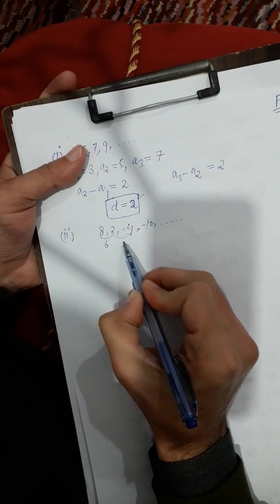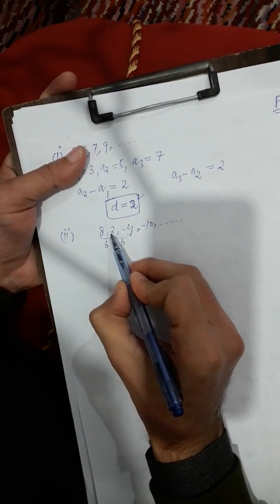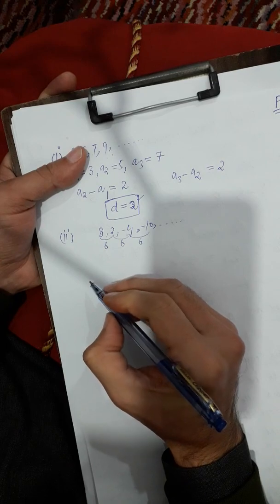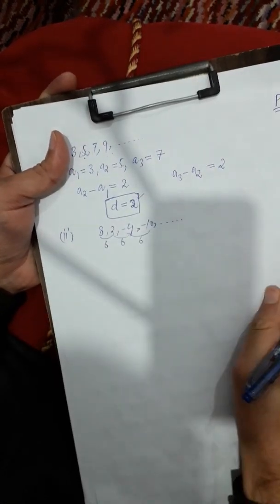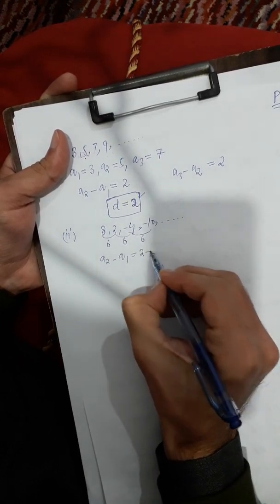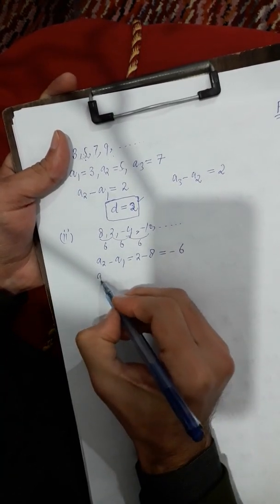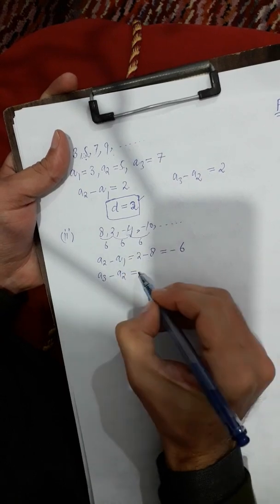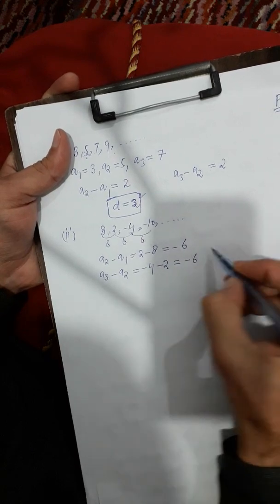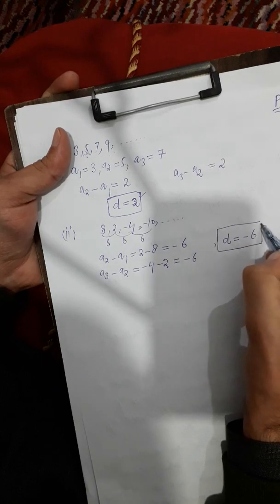In the decreasing example, the second term minus the first term gives minus six. And a3 minus a2: the third term is minus 4, minus the second term 2, gives minus six. So the common difference is minus six, and it is in arithmetic progression with a negative common difference.